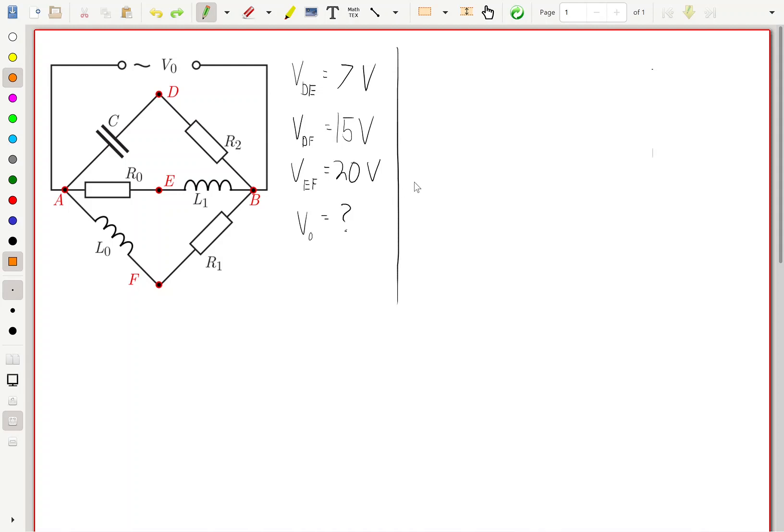This problem was taken from the 2018 Nordic Baltic Physics Olympiad. Here we have an AC circuit where we have many components of inductors, resistors, and capacitors connected in series and in parallel.